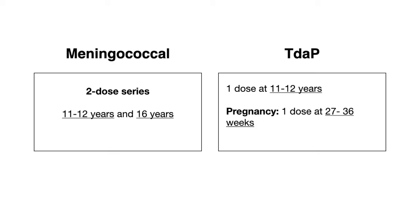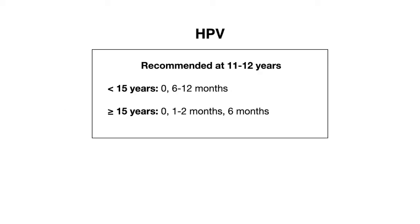The Tdap vaccine is similar to but different from the DTaP vaccine discussed earlier for younger children, and it is typically given at 11 or 12 years of age. Importantly, Tdap is also given with every pregnancy as a single dose between 27 to 36 weeks gestation.